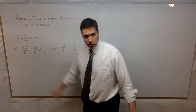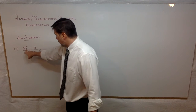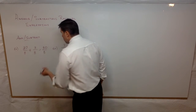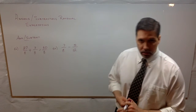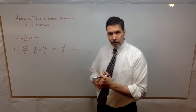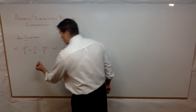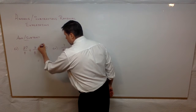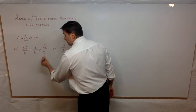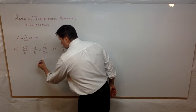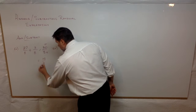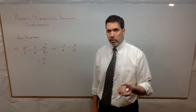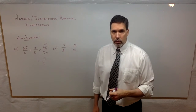What we add or subtract is the numerator. So 27 plus 3 is 30, giving us 30 over 8. Then there's one last thing to do: look at your final answer. Is that a completely simplified fraction — is it in lowest terms? The answer is no. Two divides into both: two goes into 30 fifteen times, two goes into 8 four times. So 15 fourths would be our final answer.